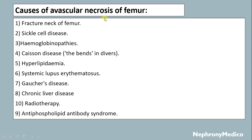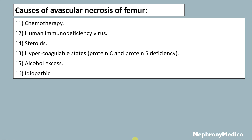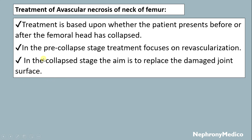Causes of avascular necrosis of the femur include fracture neck of the femur, sickle cell disease, hemoglobinopathies, Gaucher's disease, hyperlipidemia, SLE, chronic liver disease, radiotherapy, antiphospholipid antibody syndrome, chemotherapy, HIV, steroids, hypercoagulable states, alcohol excess, and idiopathic causes.